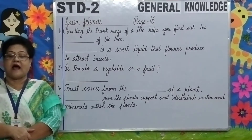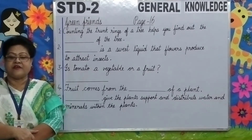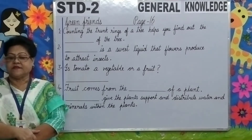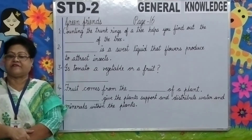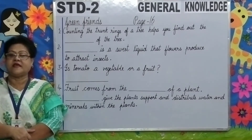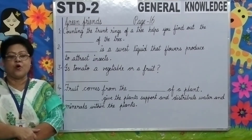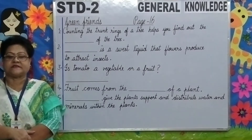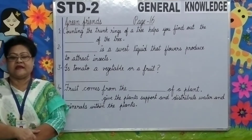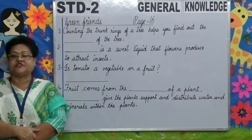Who are called our green friends? Plants are called our green friends because they provide us with various things which allow us to survive. Plants are really important for the planet and for all living things. Without plants, we would have no air to breathe. Plants absorb carbon dioxide and release oxygen from their leaves, which human beings and animals need to breathe.